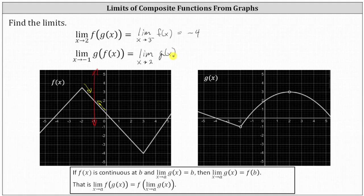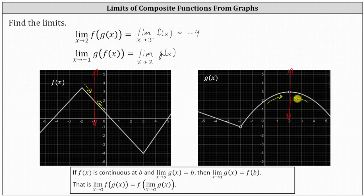In this case, we cannot write this as a one-sided limit because we are approaching the y-value of two from both above and below. Analyzing the graph of g(x), we approach x equals two from the left and the right, and in both cases we approach the y-value of positive three. So the limit as x approaches negative one of g(f(x)) equals the limit as x approaches two of g(x), which equals three.